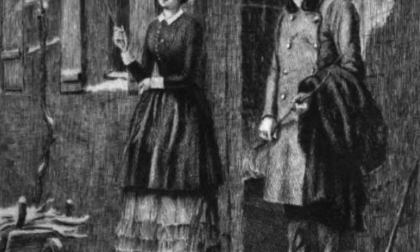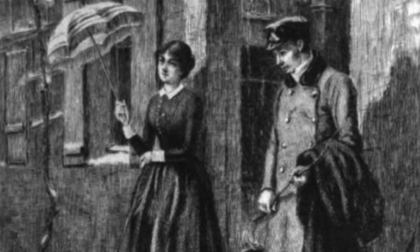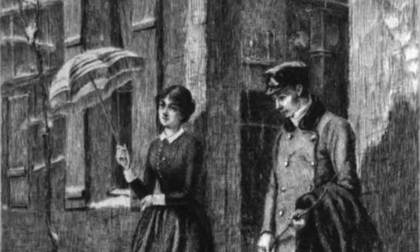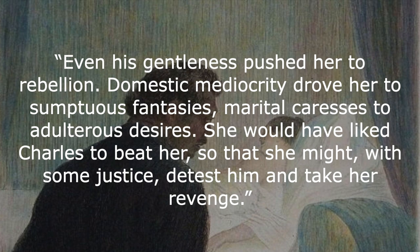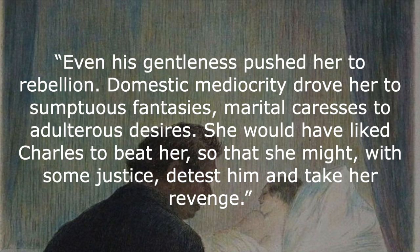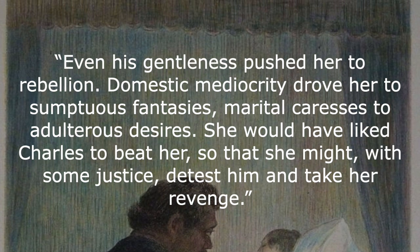They hit it off like a lion and a lioness, but at the crucial moment Emma is scared and backs off. Leon, disappointed, moves to Paris to study law. After this little experience, Emma thinks it was exciting — so she wants it again. She wishes Charles could give her a good reason to rebel, like beat her or shout at her, but Charles is a nice man. 'Even his gentleness pushed her to rebellion. Domestic mediocrity drove her to sumptuous fantasies. Marital caresses to adulterous desires. She would have liked Charles to beat her so that she might, with some justice, detest him and take her revenge.'